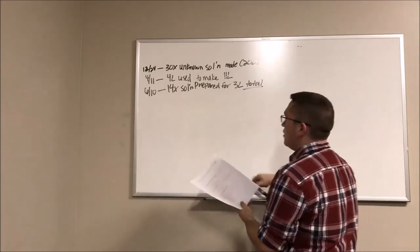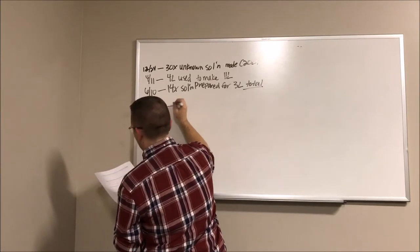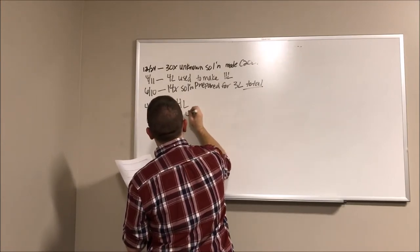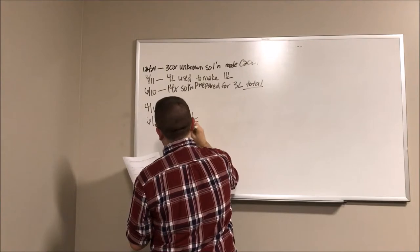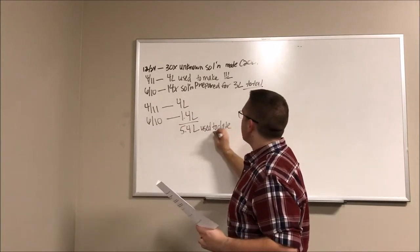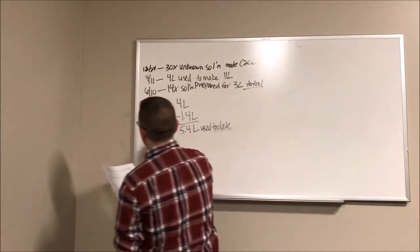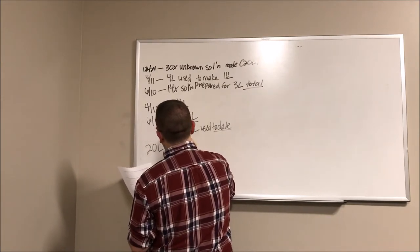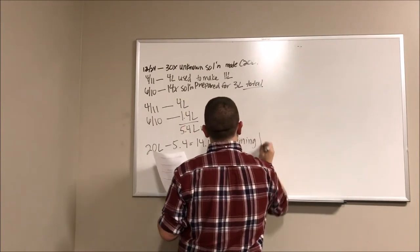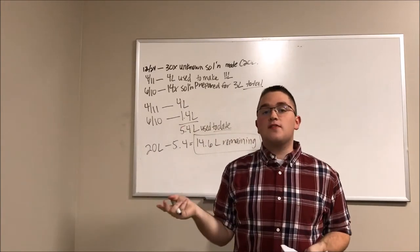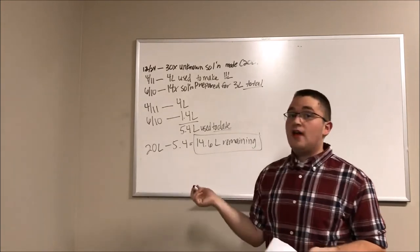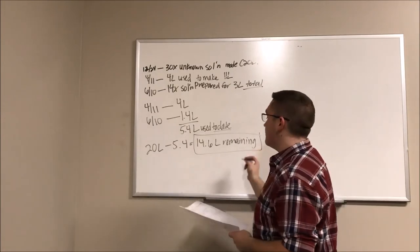So we know that we used 4 liters on 4.11 and on 6.10 we used 1.4 liters. This will give us a total of 5.4 liters used to date. And we know that we have a total of 20 liters to work with. So we can take 20 liters minus 5.4 to get a total of 14.6 liters remaining. So that means at my disposal, I'll have 14.6 liters of the solution to use whenever and wherever I feel like, which is really useful to have this left over in the lab as long as it's being stored properly and is legal.